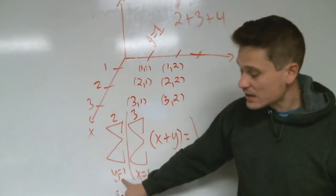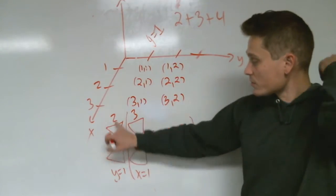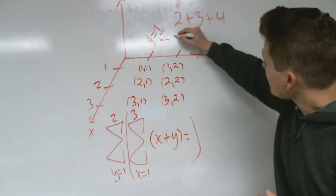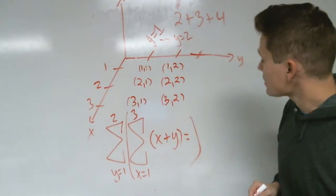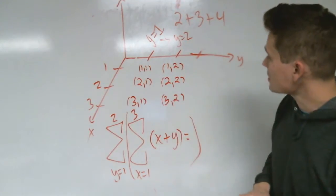And then you advance the index on the y here up to 2. So that brings you over to y equals 2 and then you perform the procedure again summing the points.